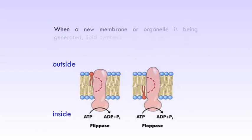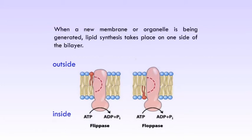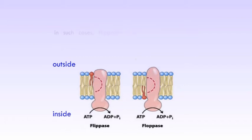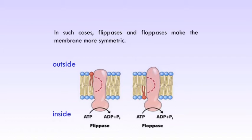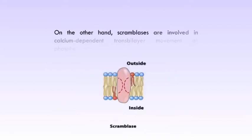When a new membrane or organelle is being generated, lipid synthesis takes place on one side of the bilayer. In such cases, flipases and flopases make the membrane more symmetric. On the other hand, scramblases are involved in calcium-dependent transbilayer movement of phospholipids.